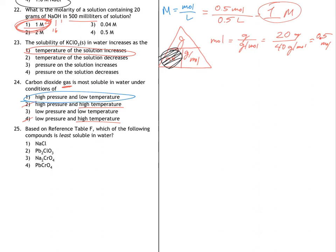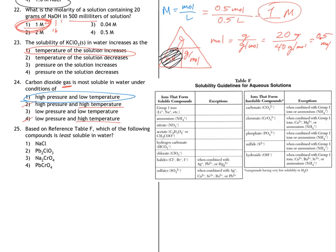And lastly, based on reference table F, which of the following compounds would be least soluble in water? So I went through the first three answer choices and I was able to find that they were all either soluble or they had exceptions to the insoluble rule. So the best answer is going to be lead chromate because you can find chromates here in the insoluble list. And then lead does not appear in the exceptions to that rule. So lead chromate is insoluble. And that's my final answer.